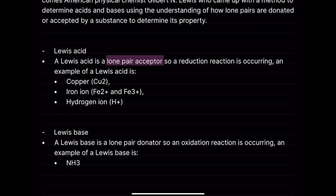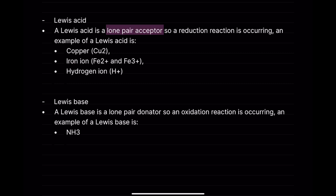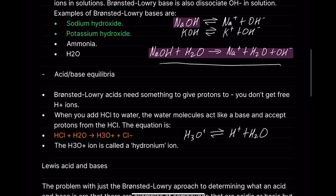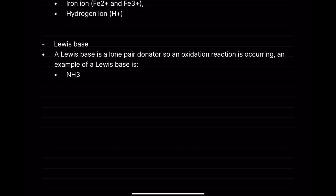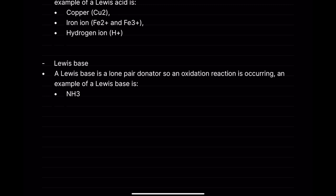If you're doing an equation and you see a reduction reaction occurring where a compound is accepting a lone pair of electrons, that is a Lewis acid. The flip side is a Lewis base — a Lewis base is a lone pair donator. An oxidation reaction is occurring. An example of a Lewis base is ammonia. A Lewis base donates a lone pair of electrons, whereas a Bronsted-Lowry base is a proton acceptor.